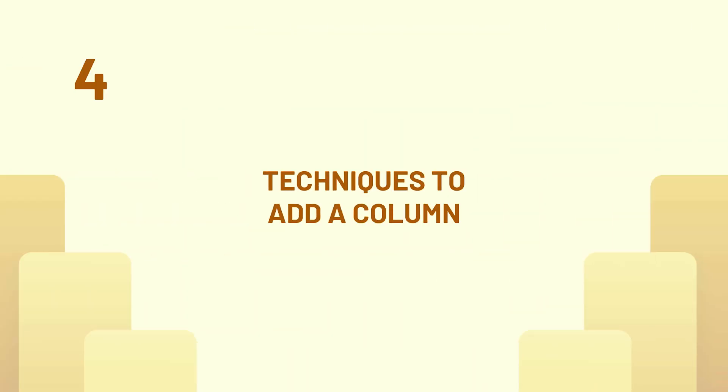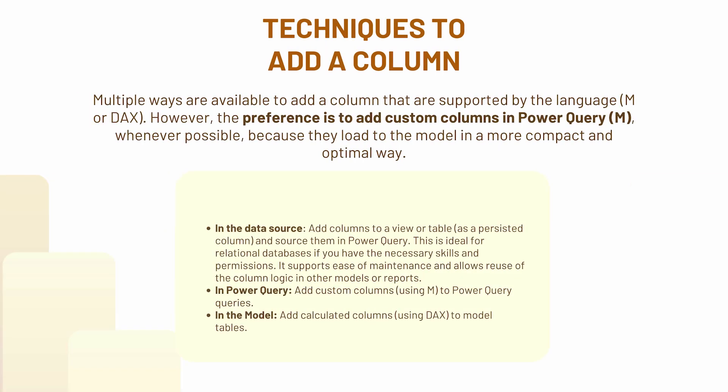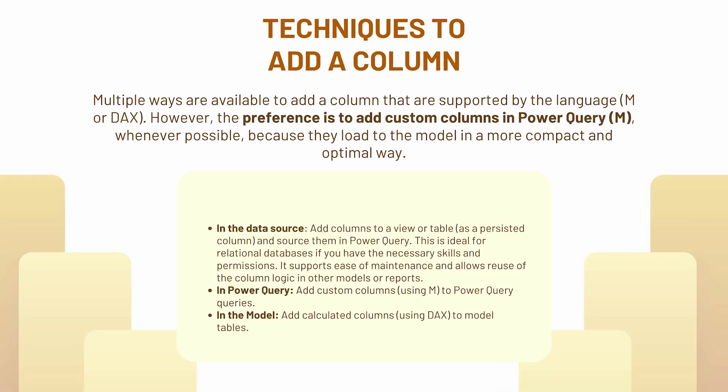Now let's talk about the techniques to add a column. There are different techniques: you can either add it directly into your data source, which is the best practice. The other two ways are that you can use Power Query to create it using the M language or M functions, or you can create it directly in your semantic model using DAX functions. So these are the three ways to add a column into your semantic model.